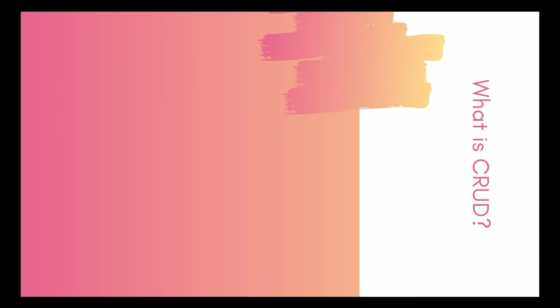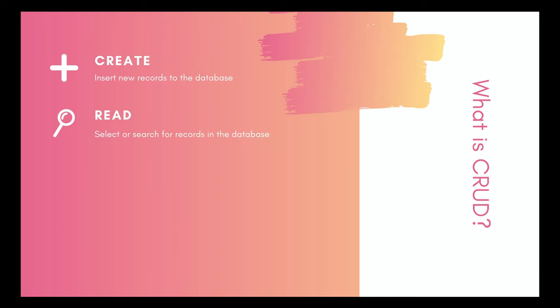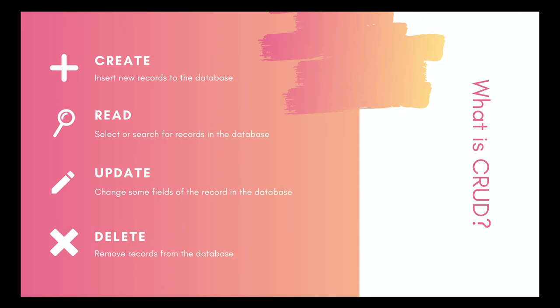So what is CRUD? There are 4 basic operations. C stands for create, or insert new records to the database. R is for read, which means retrieving the records from the database. U is update to change the content of the records. And D is delete to remove the records from the database.